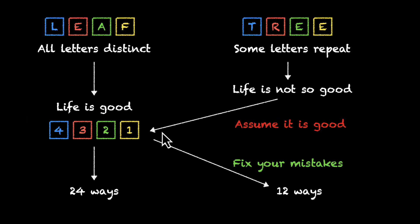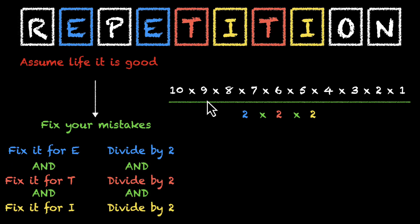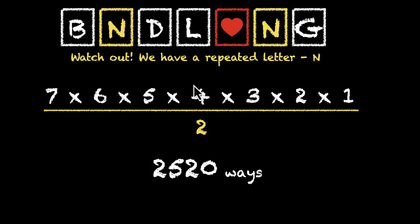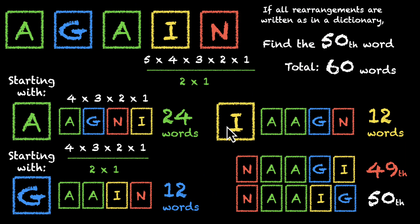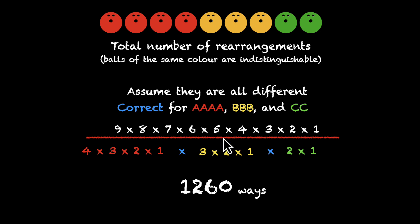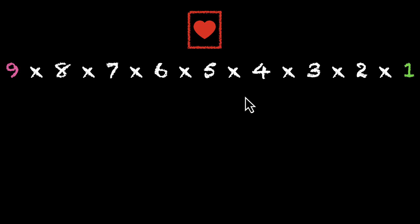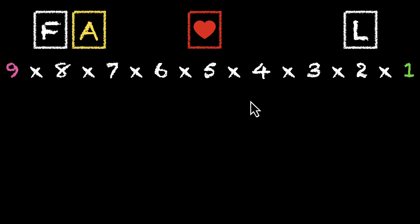We have many such chains — look at this one, and this, and this, and several more. We have names for these chains, which is why we're making this video. And as you might have already guessed from the title of this video, these are called factorials.